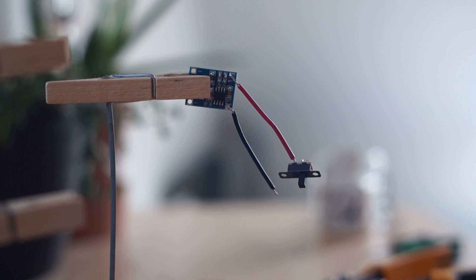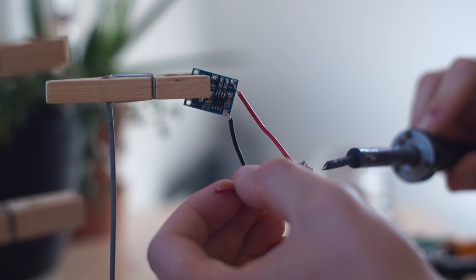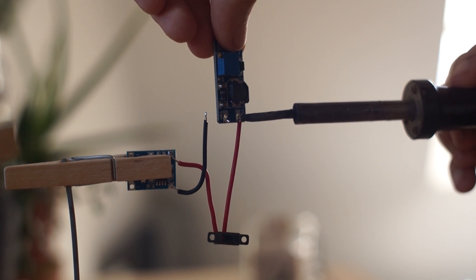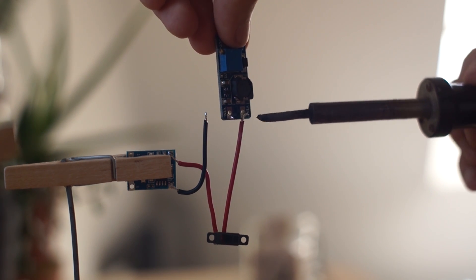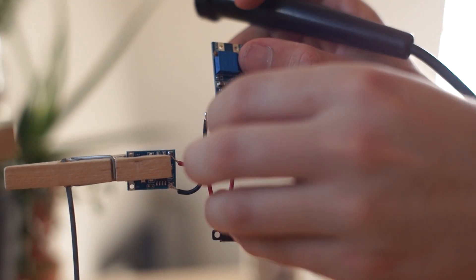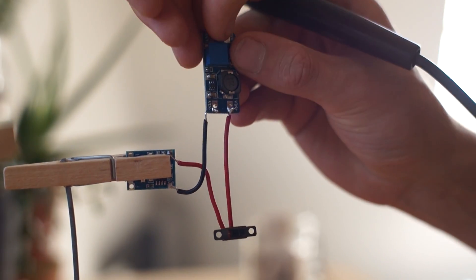Now we're going to connect the step up module, so we're going to take the positive wire coming from the switch and the negative wire coming from the battery charging board and we're going to solder them onto the inputs.